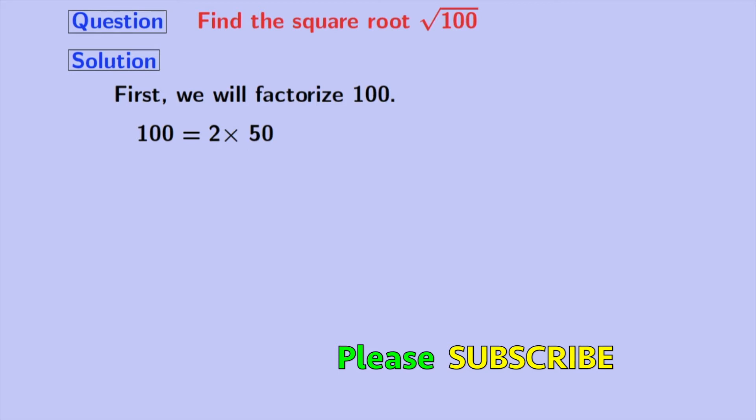Now, we will factorize 50. Again, by the same logic, 2 divides 50. So, 50 is equal to 2 times 25. Therefore, 100 is equal to 2 times 2 times 25. We know that 25 is 5 times 5, so 100 is equal to 2 times 2 times 5 times 5.